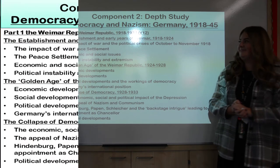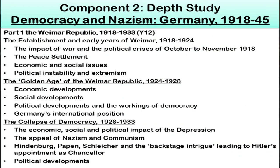Component two is the depth study — democracy and Nazism in Germany — covering a shorter period in greater depth. In Year 12 we focus on the Weimar Republic from 1918 to 1933: how it was established post-World War One, the impact of the war, the peace settlement, the Treaty of Versailles, and the economic and social issues that followed. We then look at the golden age of the Weimar Republic between 1924 and 1928 — economic, social, and political developments — and Germany's emerging international position, before examining the collapse of democracy between 1928 and 1933.